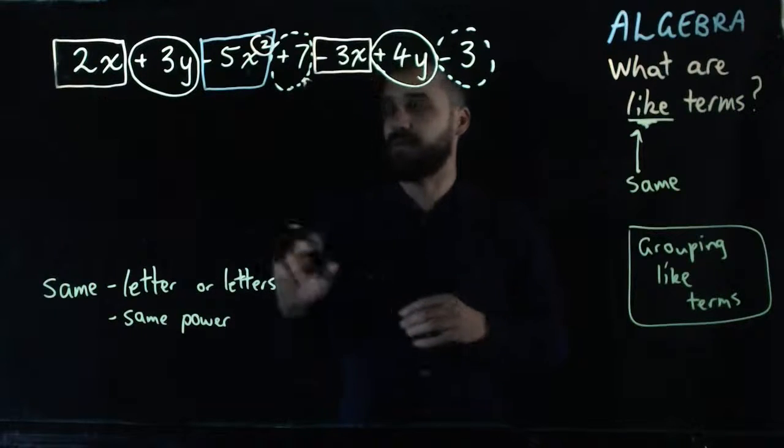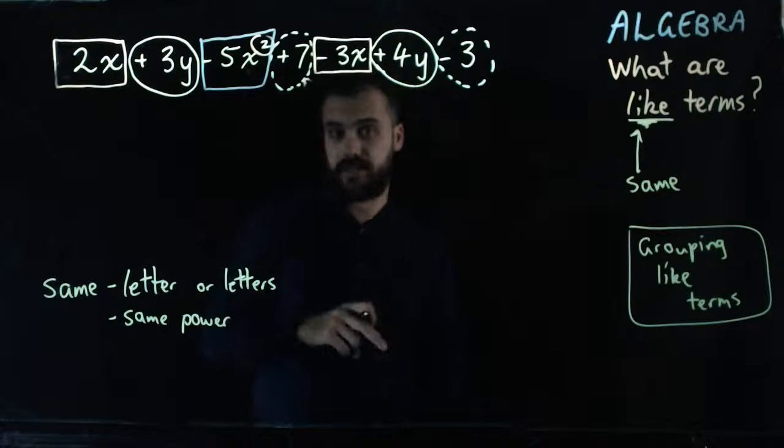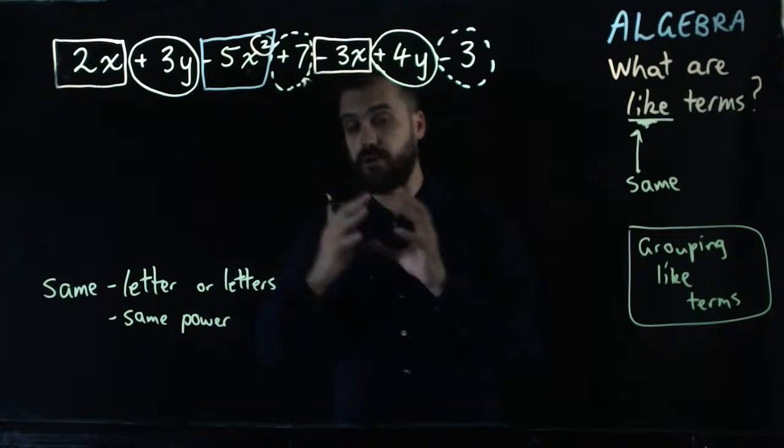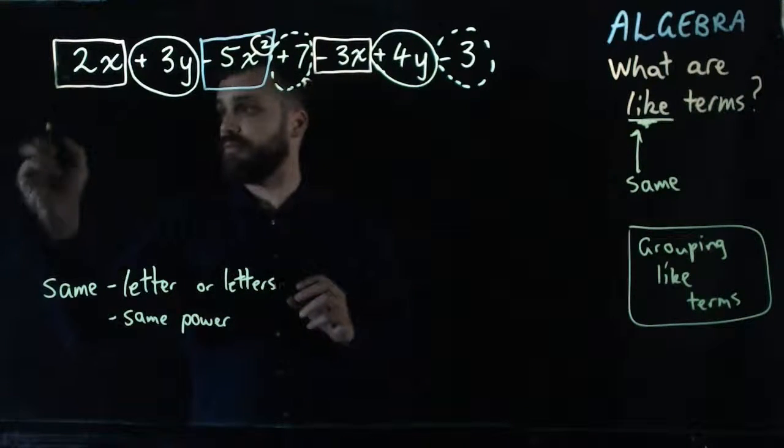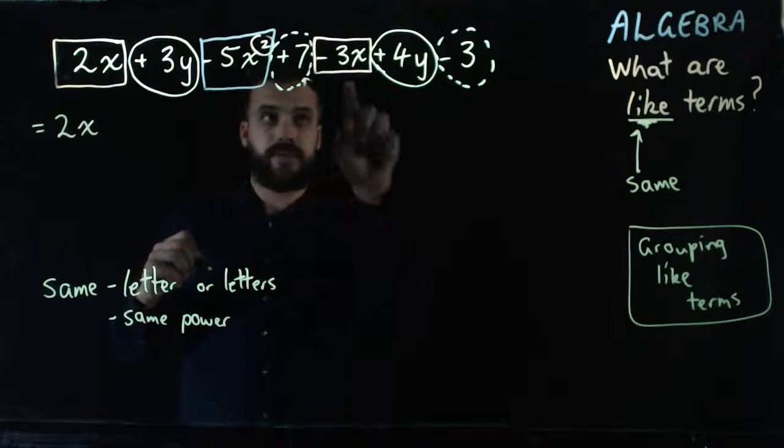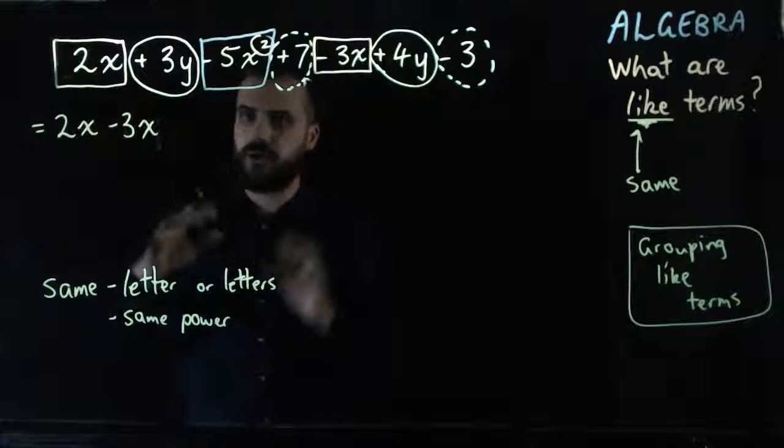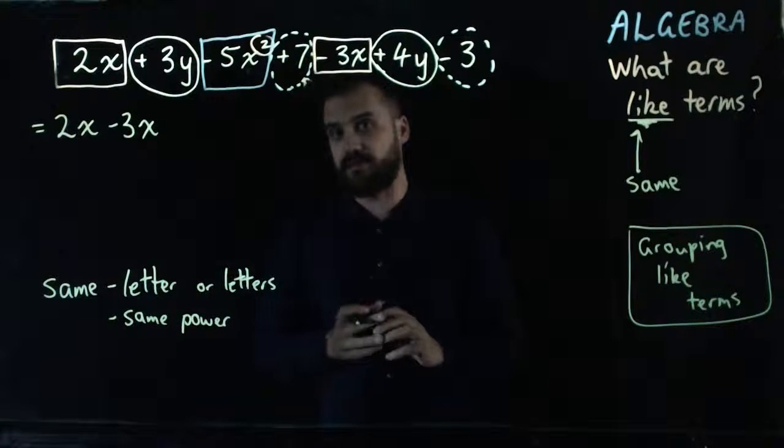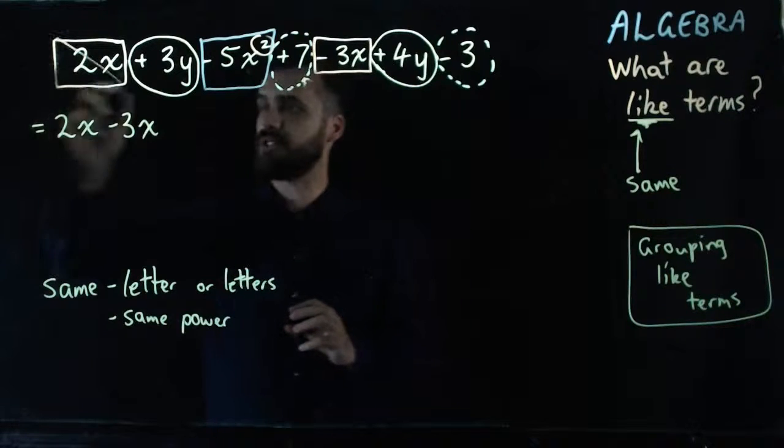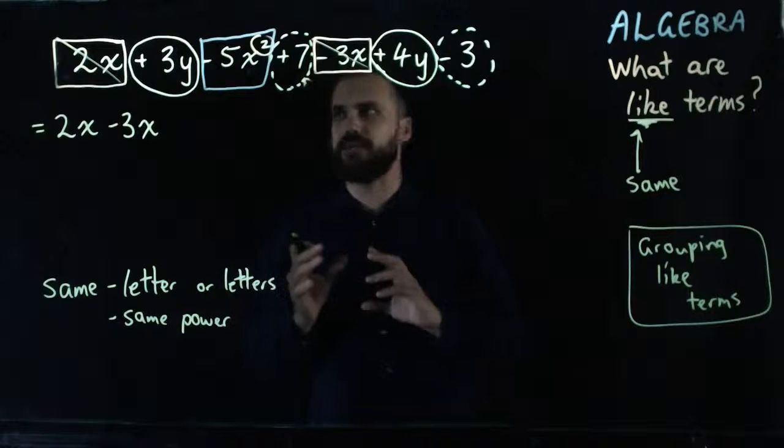Let's take a look at this first one here. 2x minus 3x, like terms. So I'm going to group them. 2x minus 3x. Grouping just means putting them together. So I've grouped those. I'm just going to put a line through them so I don't forget.